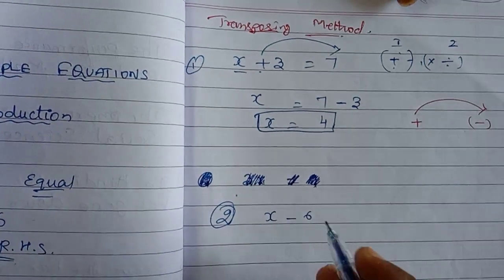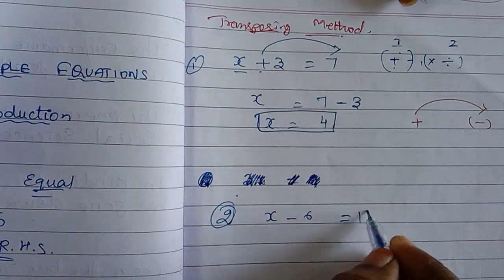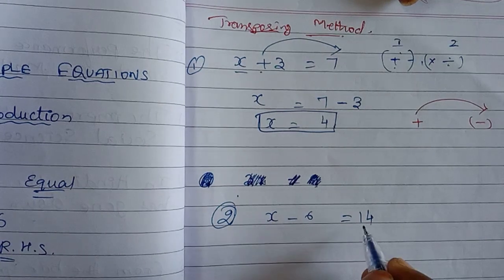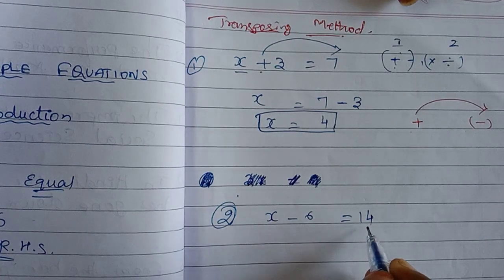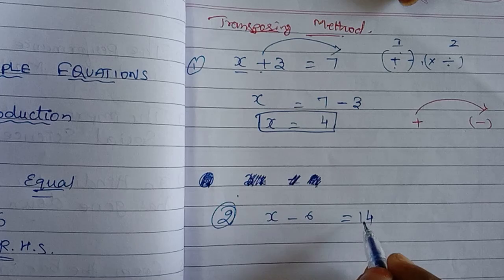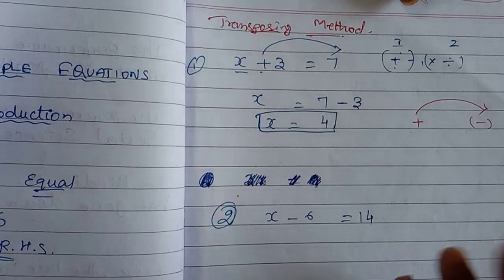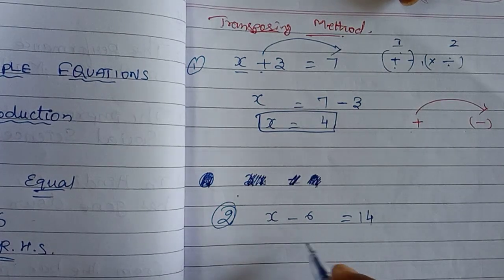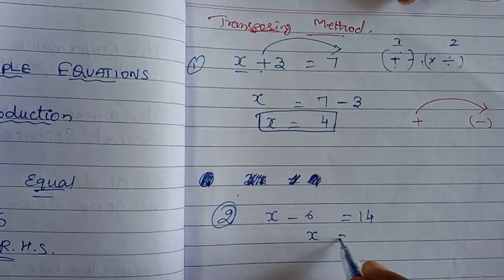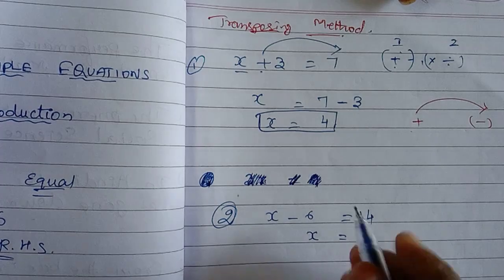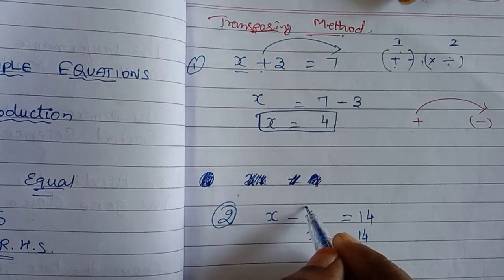Here X minus 6 is equal to 14. We know that X is equal to 14 plus 6, which equals 20. Transpose means: plus becomes minus and minus becomes plus. So X equals 20. Now if we have X divided by 2, we transpose the 2 to the other side.